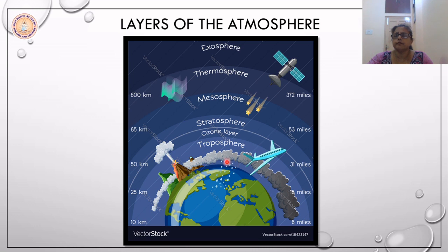And another very important feature of the troposphere is that as we go higher, the temperature begins to decrease. This is known as the lapse rate. The lapse rate is the rate at which the temperature decreases with increasing height. It is very clearly felt in the troposphere, where as we go higher, the temperature goes on decreasing.